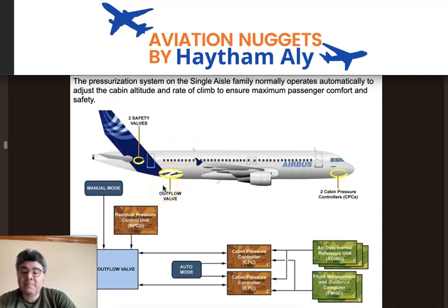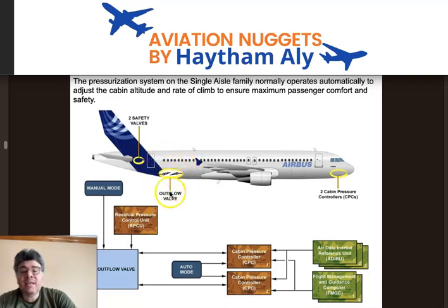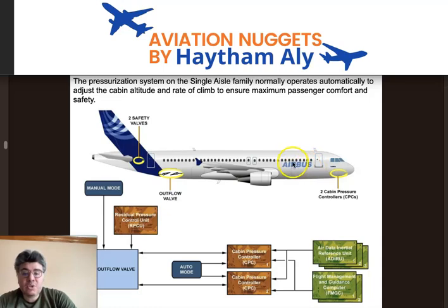The pressurization system philosophy is very simple: we control the amount of air inside the cabin going outside through one outflow valve. In the single aisle family we have only one outflow valve to control the cabin altitude. This outflow valve is of major importance.